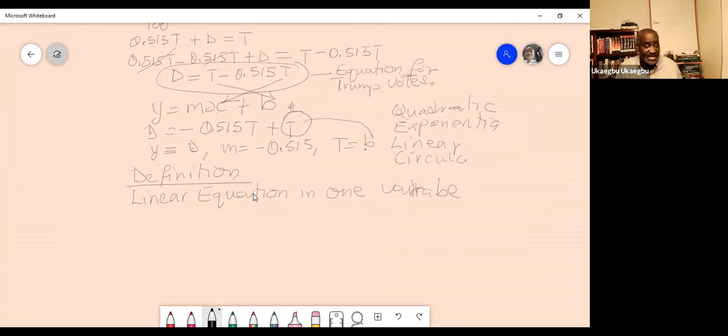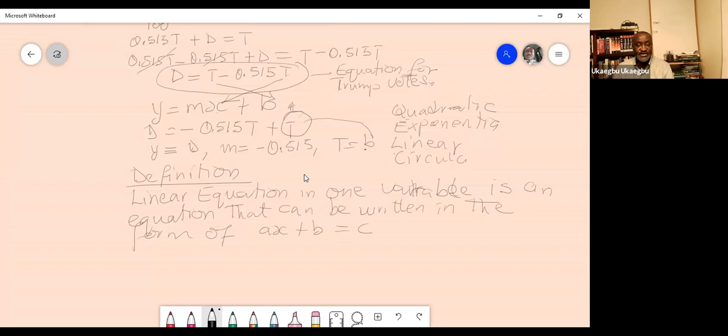Pay attention. I'm just going to say it and then you can write it down. So I'm defining this. So I would say a linear equation in one variable is an equation that can be written in the form of AX plus B plus C.